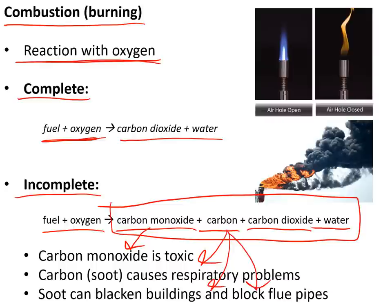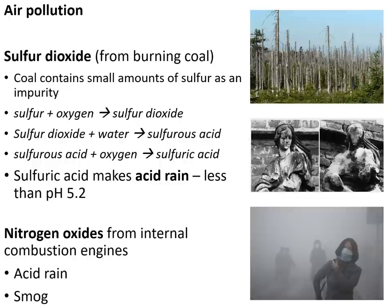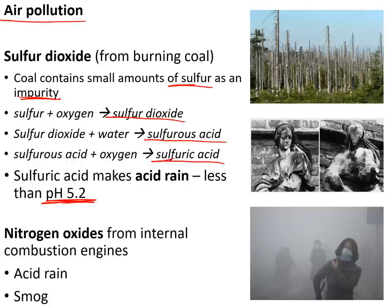Soot can also blacken buildings and block flue pipes, which can be dangerous at home. Burning fuels can produce air pollution — for example, sulphur impurities in coal burn to produce sulphur dioxide, which dissolves in clouds to make sulphurous acid and then sulphuric acid, producing acid rain with a pH of less than 2. Acid rain can kill forests, poison lakes, and corrode buildings and statues.